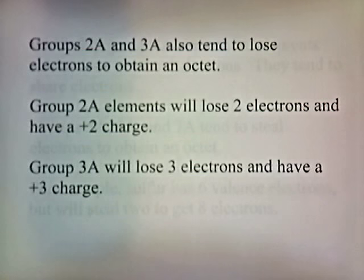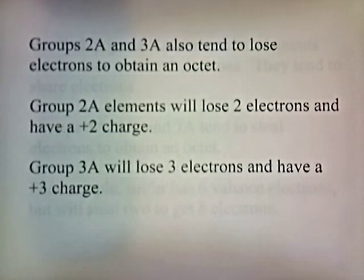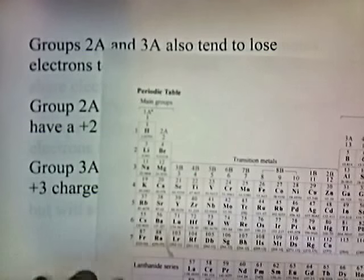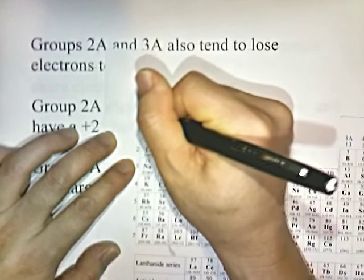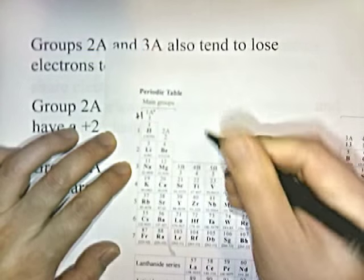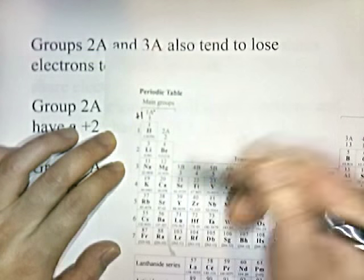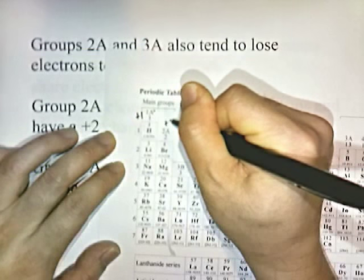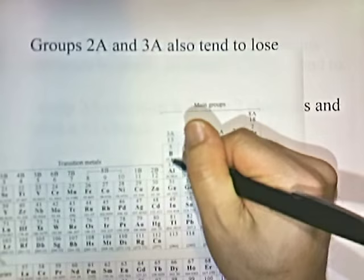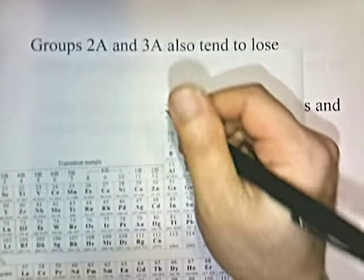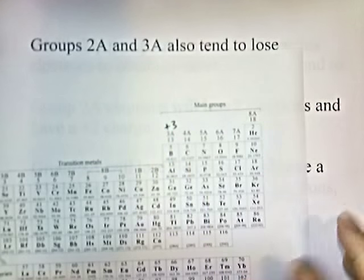Groups 2A and 3A also tend to lose electrons to obtain an octet. Group 2A elements will lose 2 electrons and have a plus 2 charge. Group 3A will lose 3 electrons and have a plus 3 charge. So group 1A loses an electron — oxidation number is plus 1. Group 2A loses 2 electrons — oxidation number is plus 2. And group 3A loses 3 electrons to get an octet, so their oxidation number is going to be plus 3. You need to memorize that.